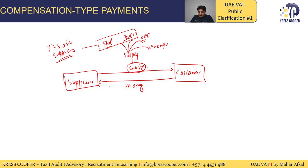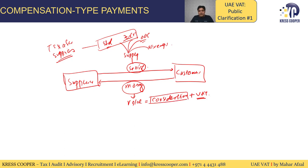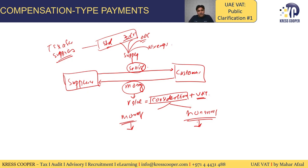Against this supply, the supplier is getting money from the customer. This amount that the supplier receives from the customer is called the value of the supply. In the language of the law, the value of the supply is equal to consideration. It can be in the form of monetary consideration or non-monetary consideration. The value of non-monetary consideration is equal to the market value of that non-monetary consideration.